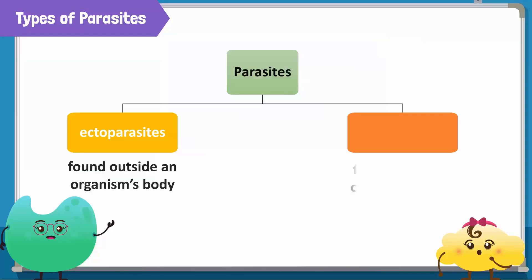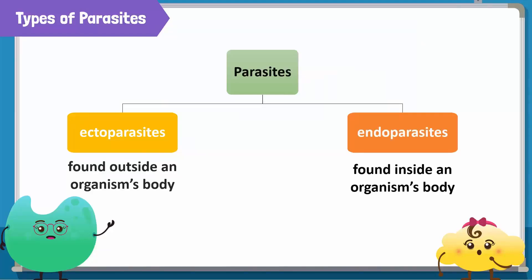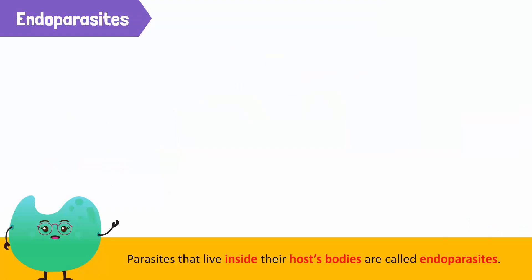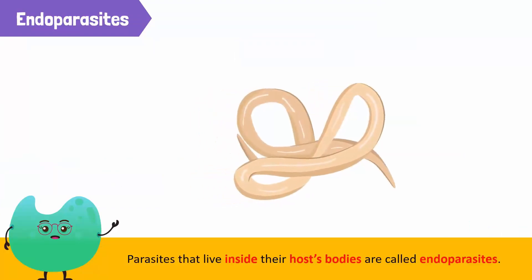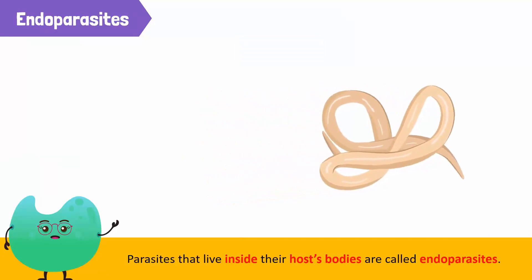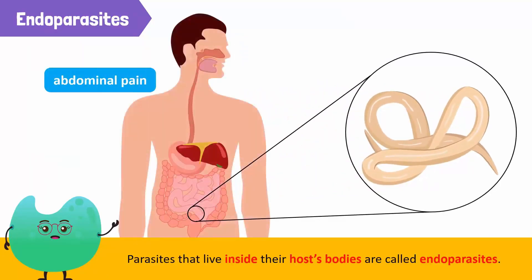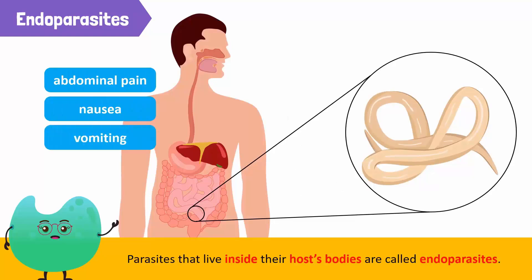Parasites that live inside their host's body are called endoparasites. An example of such parasites is the roundworm. They can be found in humans' intestines, causing abdominal pain, nausea, vomiting, diarrhea, and visible worms in stool.